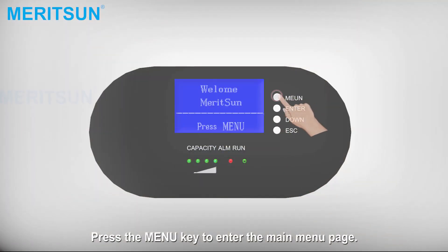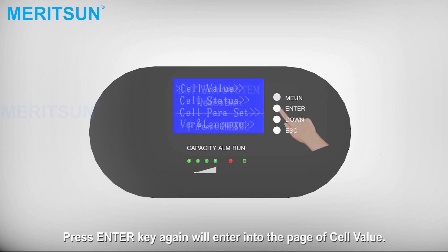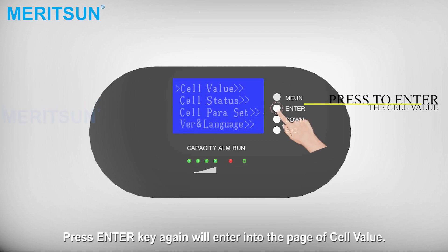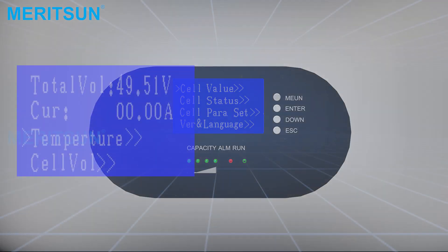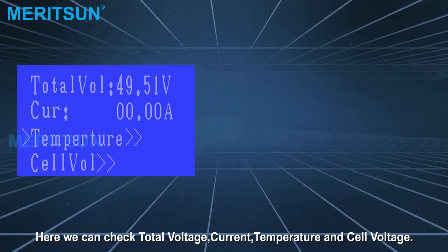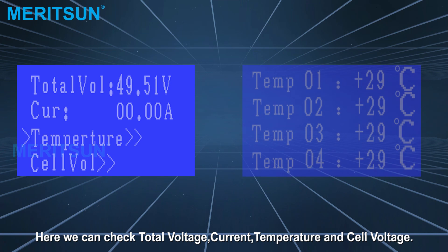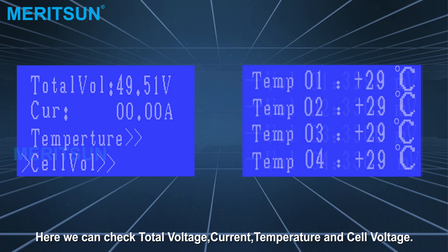Press the menu key to enter the main menu page. Press the Enter key again to enter into the page of cell value. Here we can check total voltage, current, temperature, and cell voltage.